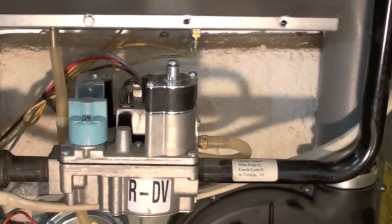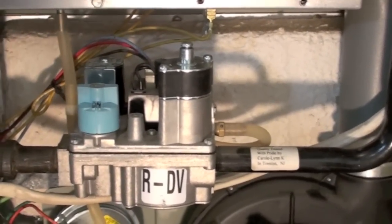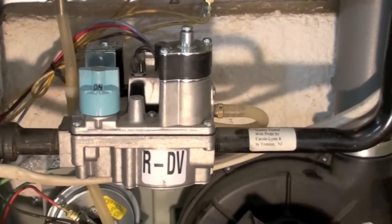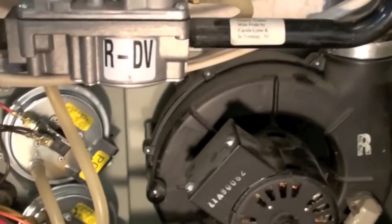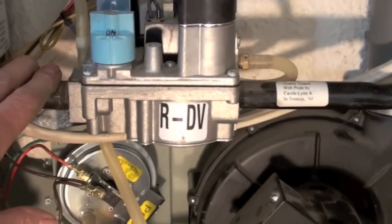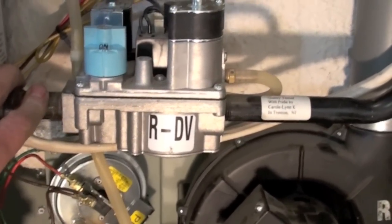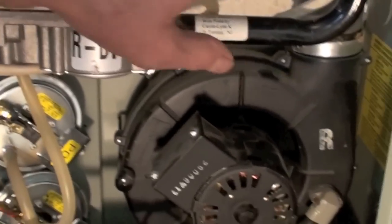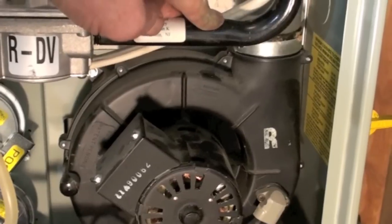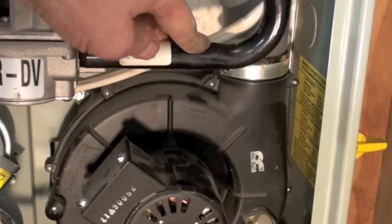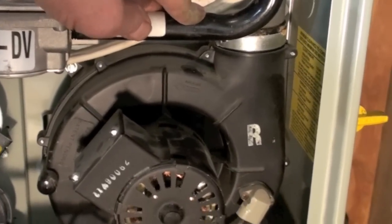We're going to read the output pressure to the manifold of this gas valve. The manifold is right here, the inlet gas is right here. Inlet gas should be coming in about seven eight inches water column. This will be at low fire for this 1.4 1.6 somewhere in there.